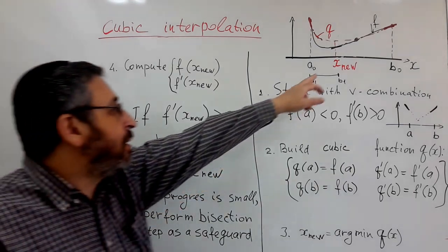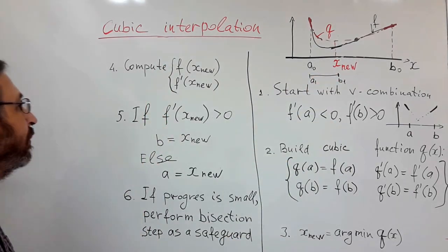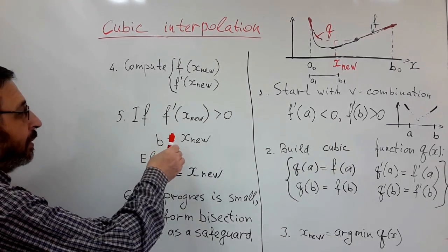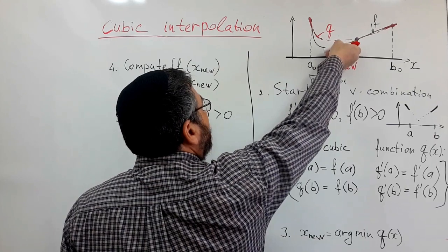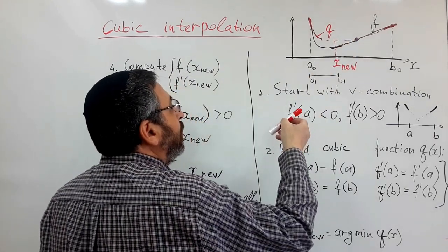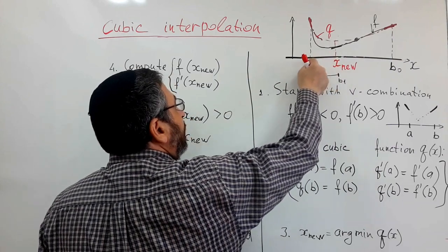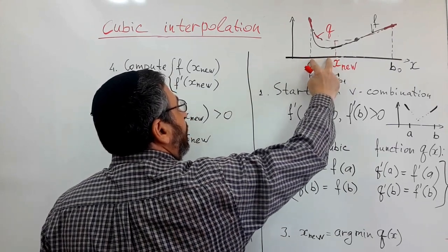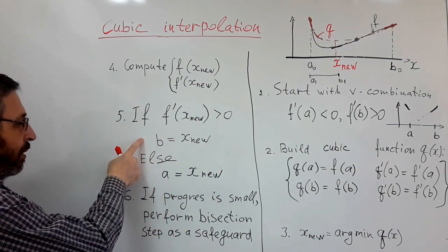So when we get this new point, we of course compute function value and derivative. And we check whether derivative is positive or negative at this new point. If it's positive, then we know that our minimum is located on the left sub-interval, like it's written here.